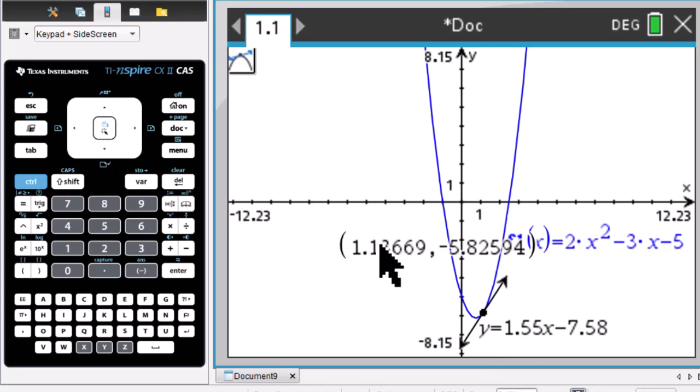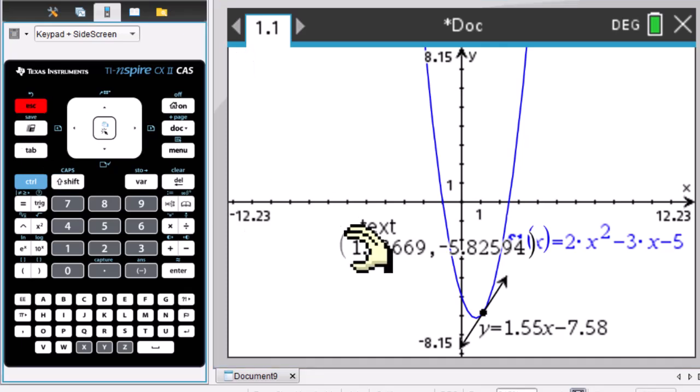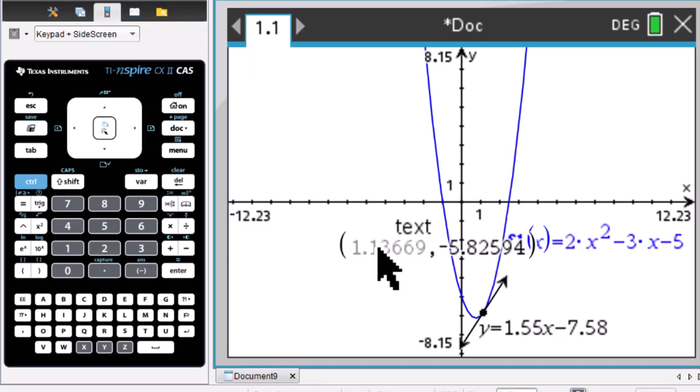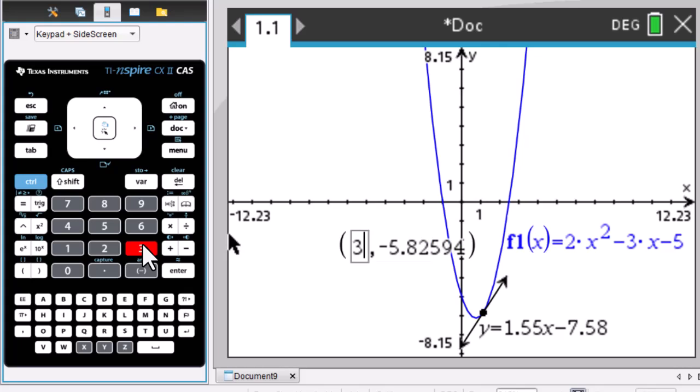If you want to figure out tangent equation when x equals 3, just go to ESC. Then double click on this x-coordinate, type in 3, enter.